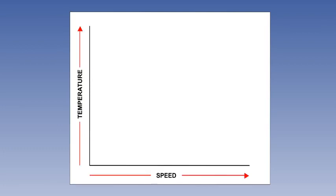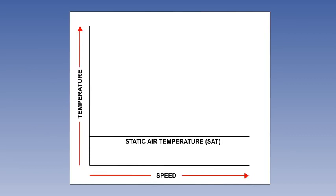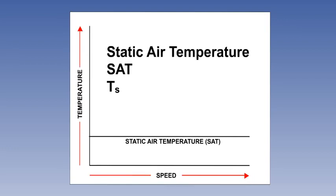Let's show these combined effects on a graph. The y-axis represents temperature and the x-axis represents the aircraft's speed. The temperature of the undisturbed air through which the aircraft is about to fly is what we are trying to measure. We call this the static air temperature, or SAT for short.